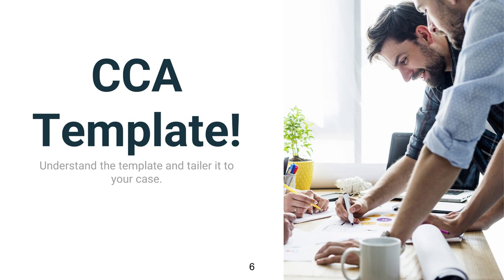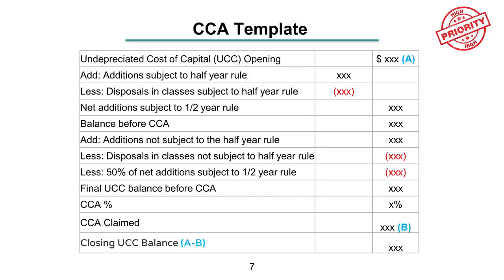Now let's talk about the CCA template I've built for you to use. Once you understand how to use the template, you can tailor it to any case you're doing. You'll start with the undepreciated cost of capital — that would be your opening balance. If you haven't bought anything in previous years, that opening balance will be zero.